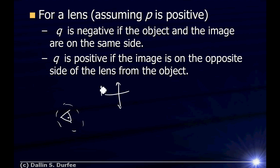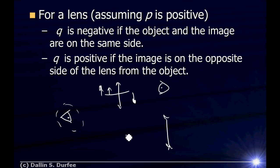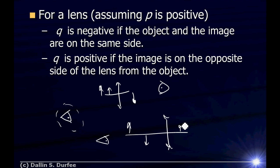For example, with a lens, I look through the lens at my object. If the image forms on the side with my eye, Q is positive. If it forms on the side away from my eye, it's negative. For a mirror, I look at the reflection. If the image forms on the same side as my eye, it's positive. If it forms on the other side, it's negative and it's a virtual image. Negative Q is virtual; positive Q is real. I can project a real image onto paper, a screen, a CCD detector.